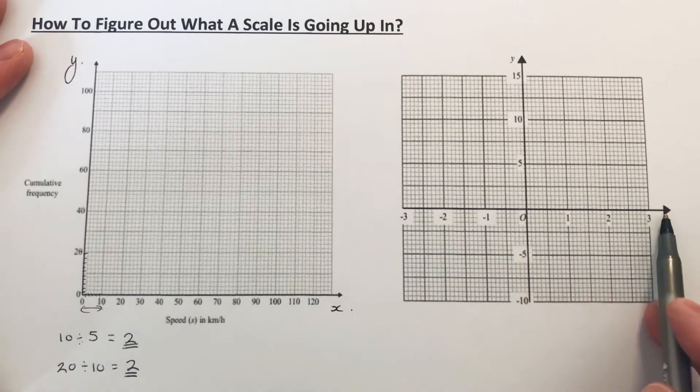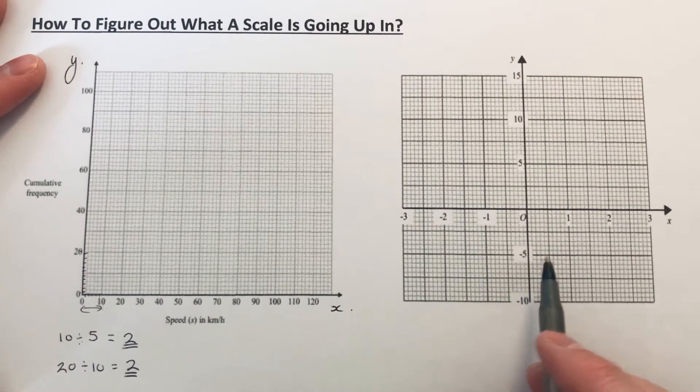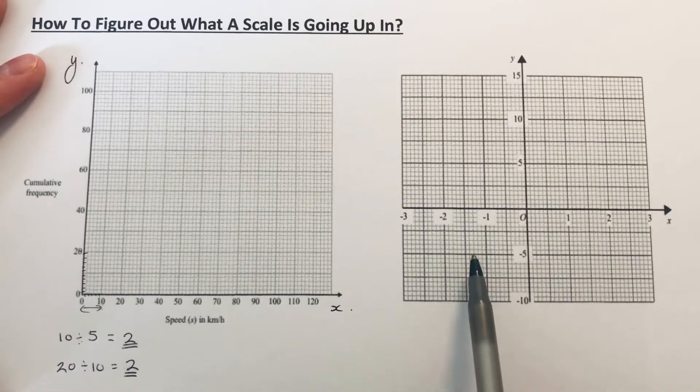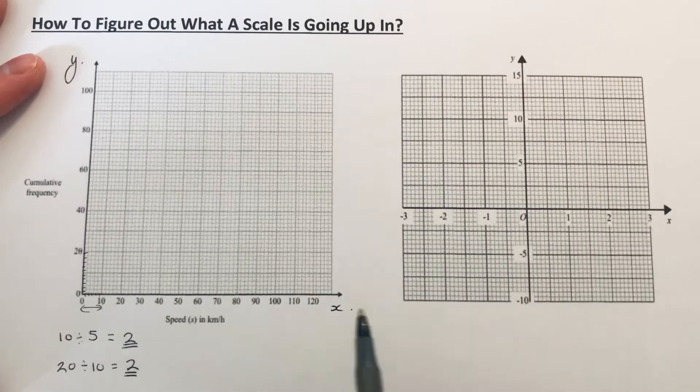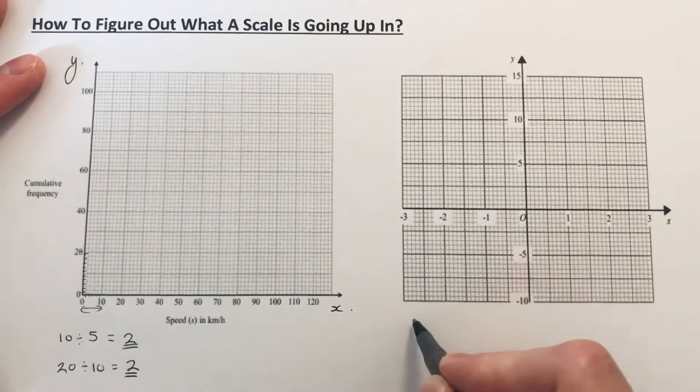You can see the x-axis is going along in ones. We got ten squares in between each number, so I'm gonna do one divided by ten this time.